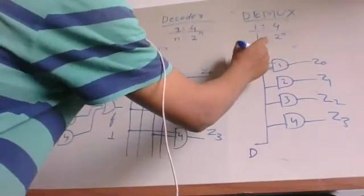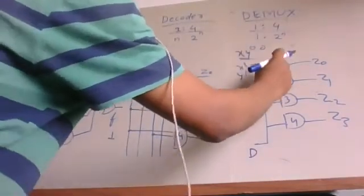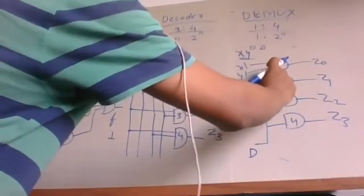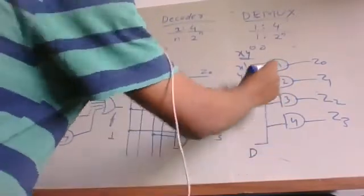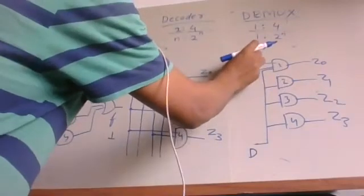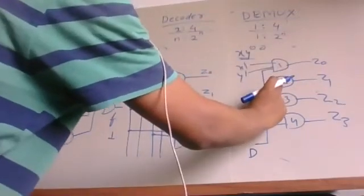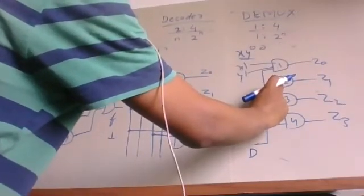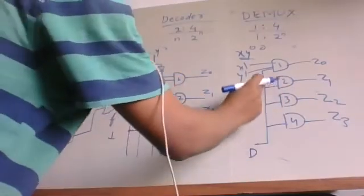When the control signal is 00, the first AND gate is activated and data transfers to the first output. When the control signal is 01, the second AND gate is activated and data transfers to the second output.